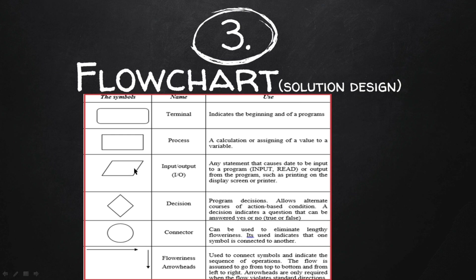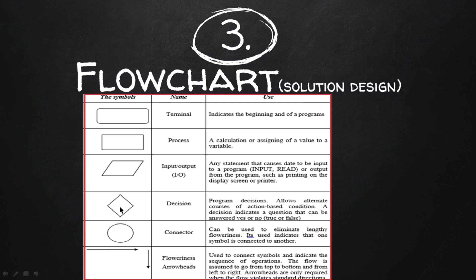For input and output we use another symbol. If we want to take input from the user — like 'enter any number' — and in QBasic there is INPUT, in C programming there is printf and scanf — for that we use the input/output symbol. If you want to display something to the output screen, use this symbol. The diamond-like symbol is called Decision — used to check a condition. For example: if rainy then take umbrella, else don't. For connecting the flowchart we use a Connector, and an Arrow shows the direction of flow.